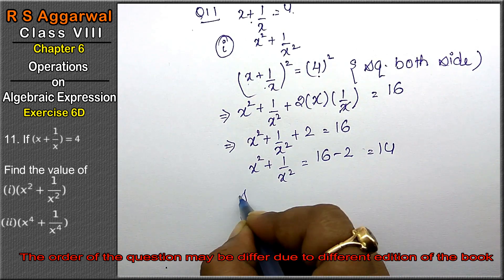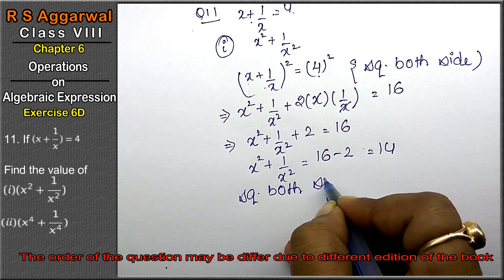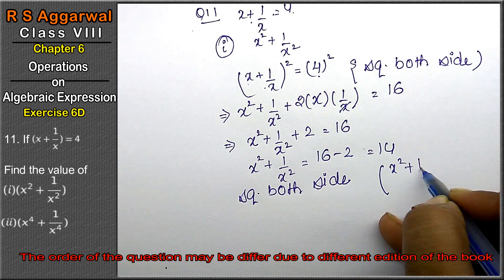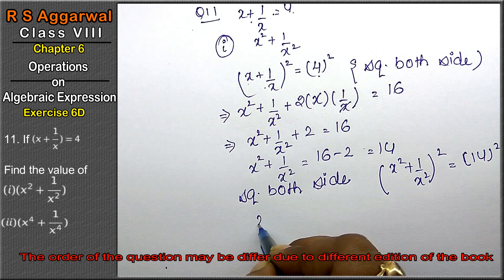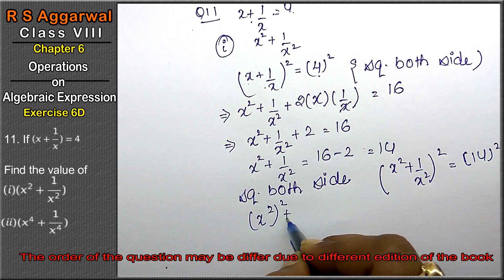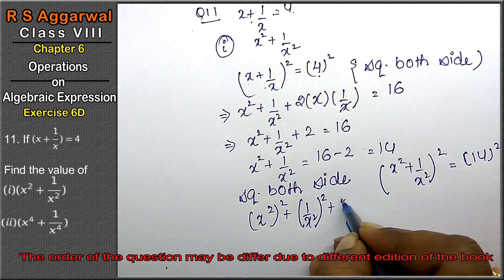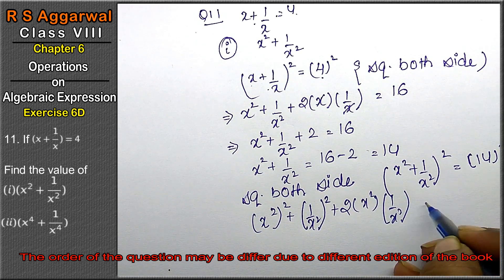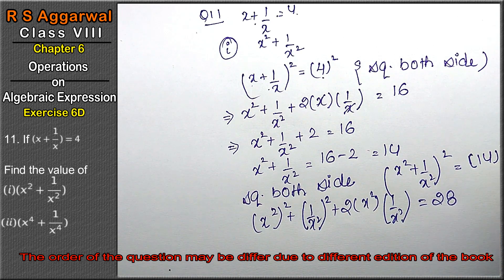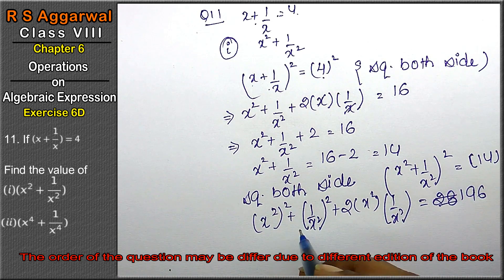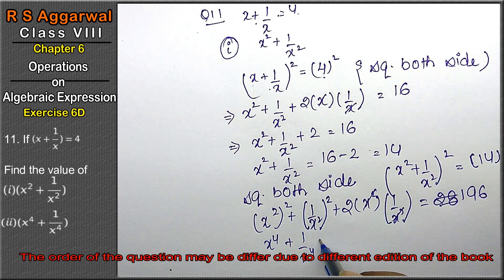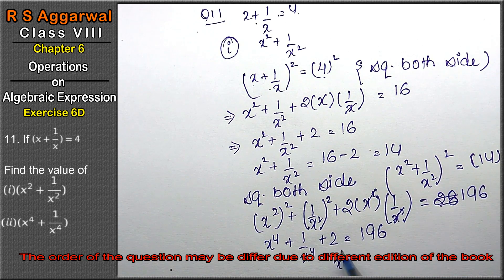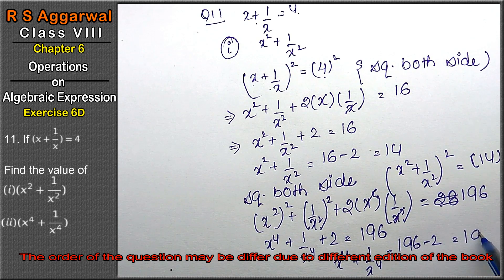Now for x⁴ + 1/x⁴, we square both sides again: (x² + 1/x²)² = 14². So x⁴ + 1/x⁴ + 2 × x² × 1/x² = 196. That means x⁴ + 1/x⁴ + 2 = 196. So x⁴ + 1/x⁴ = 196 - 2 = 194, which is the answer.